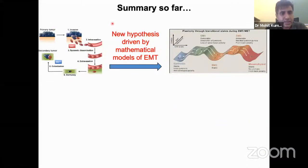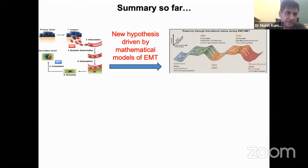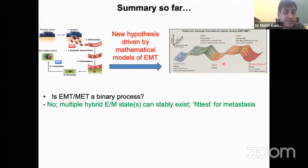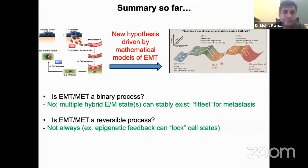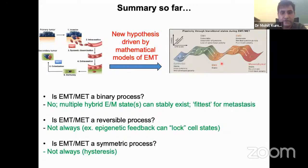Summarizing the EMT part: mathematical models have played a key role in moving thinking about metastasis dynamics from a binary EMT-MET process to one with many more states — and those additional states are actually the most metastatic ones. Is EMT binary? No. Is it reversible? Not always — epigenetic feedback can make it irreversible. Is it symmetric? No — there is hysteresis.